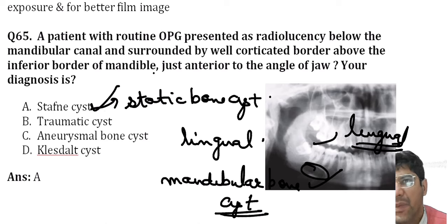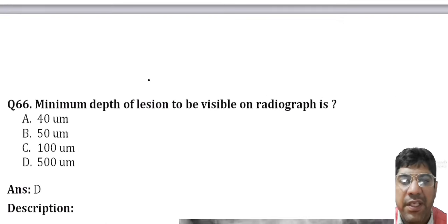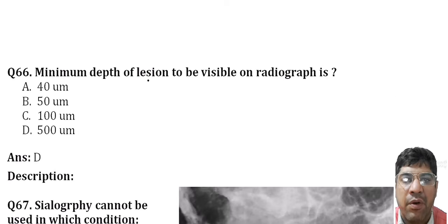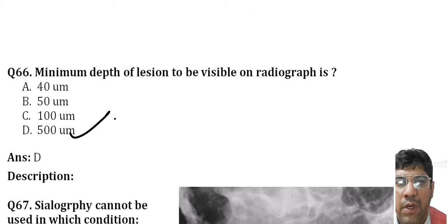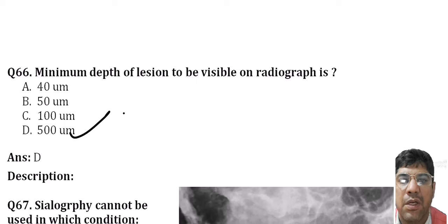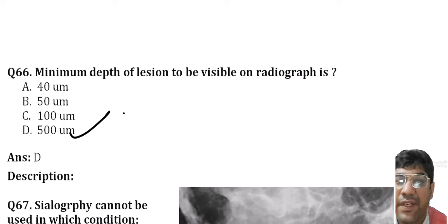The minimum depth of a lesion to be visible on radiograph is 500 micrometers. Although radiographs may show caries that are not visible clinically, the minimum depth of a detectable lesion on radiograph should be noted.